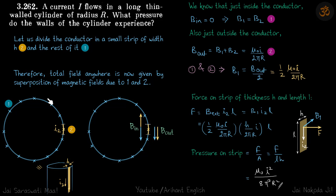Let us consider the cross-section of this cylinder and divide this conductor into a small strip of width h and the rest of it. We are dividing this whole conductor into a small strip of width h and the rest of the conductor.